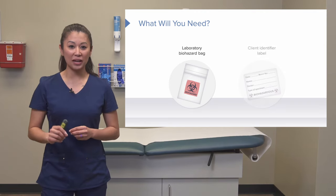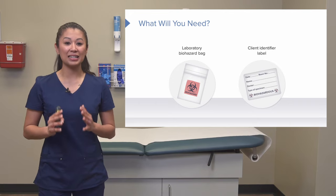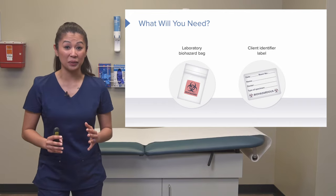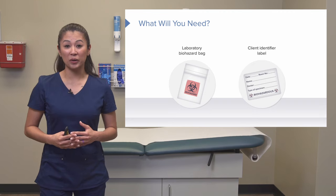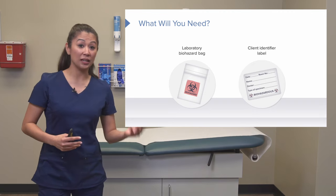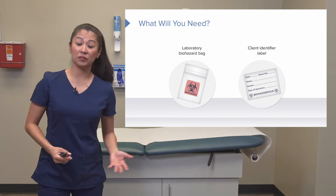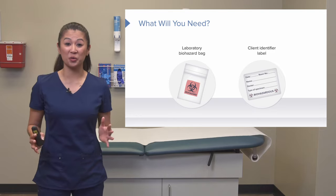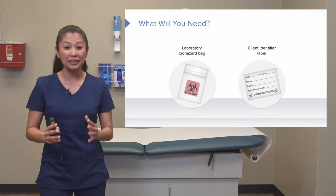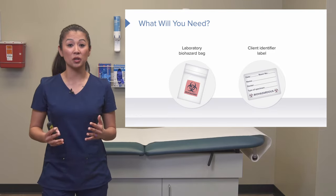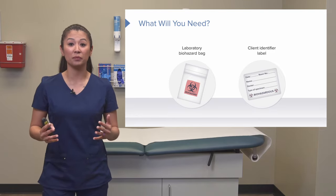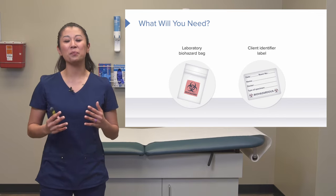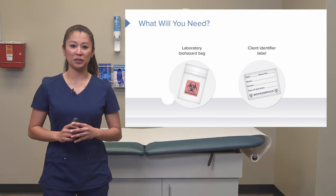Make sure the patient has a client identification label on the specimen. If we don't label it, we don't know if it's his, hers, room 952, or room 962. We're not sure. And that's really important in regards to patient results and treatment. So make sure you put a patient label on your specimen.